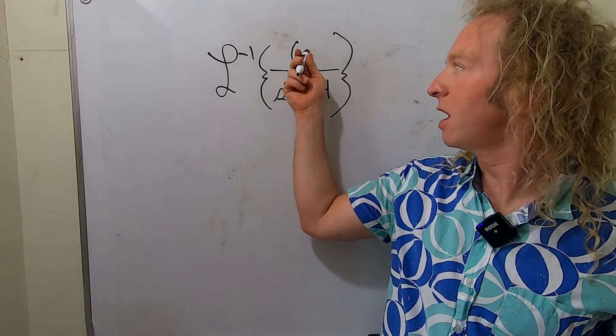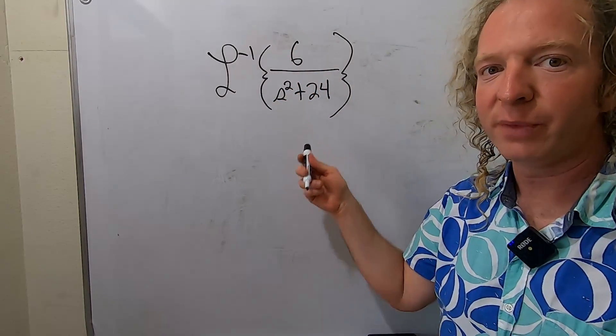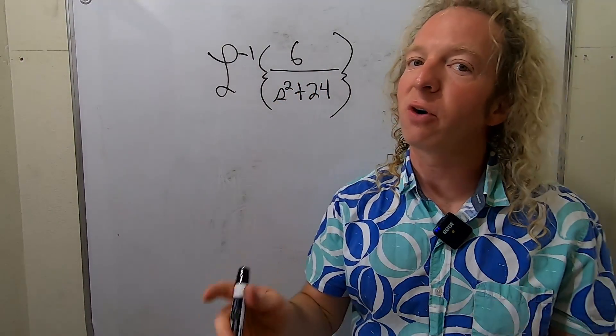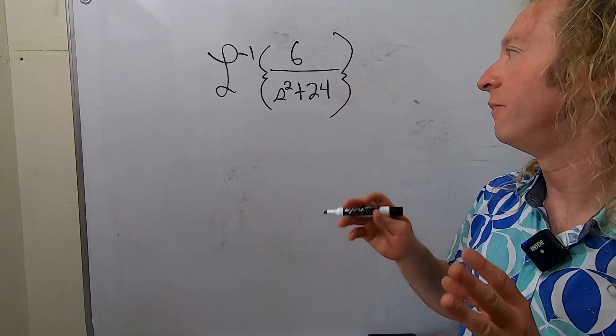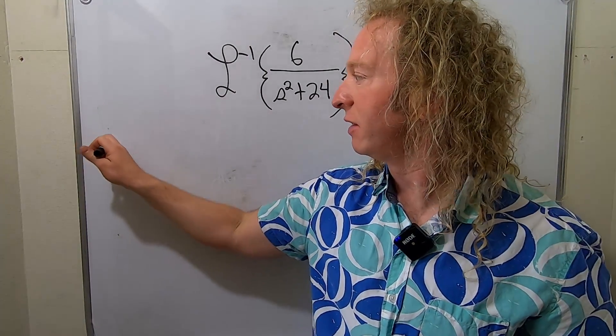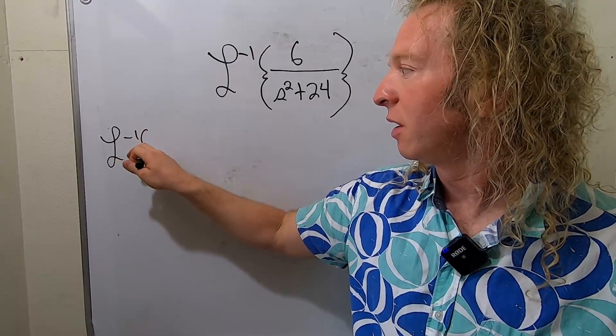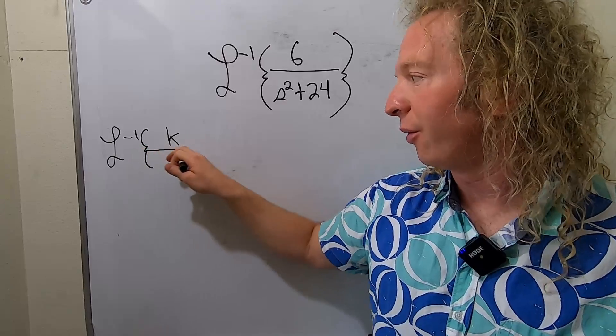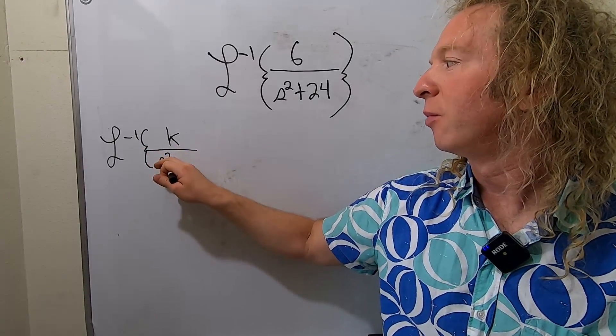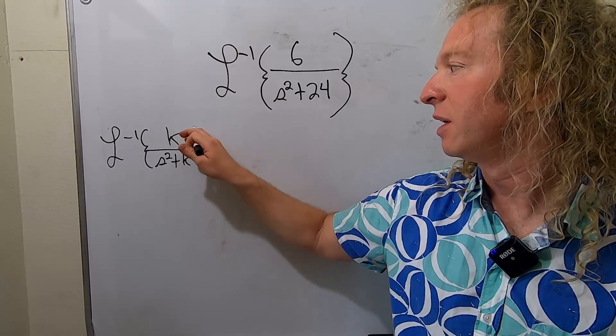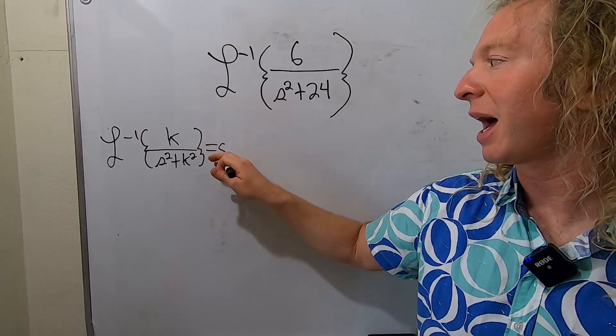Because we have a number up top and s squared plus a number, it's very likely we're going to use the formula that leads us to the sine function. Recall that the inverse Laplace of k over s squared plus k squared is simply equal to sine kt.